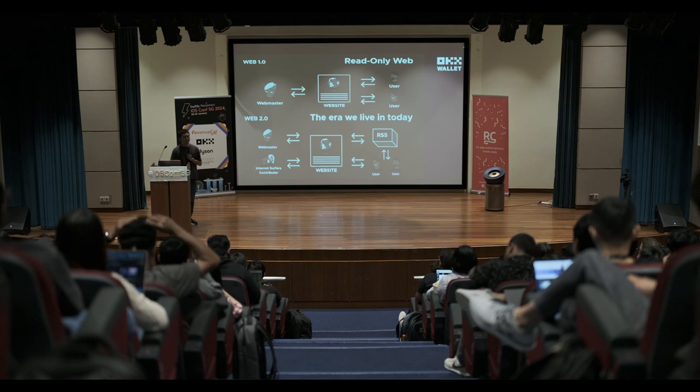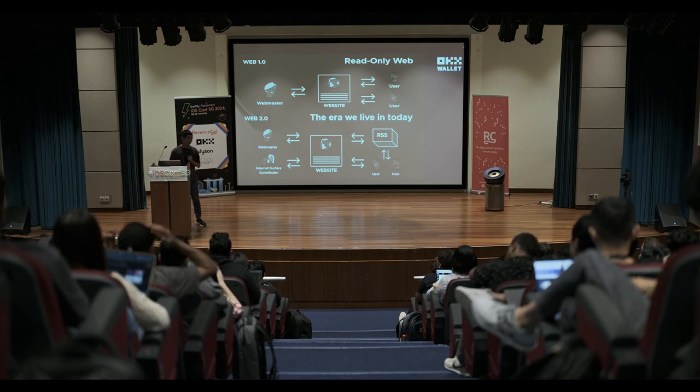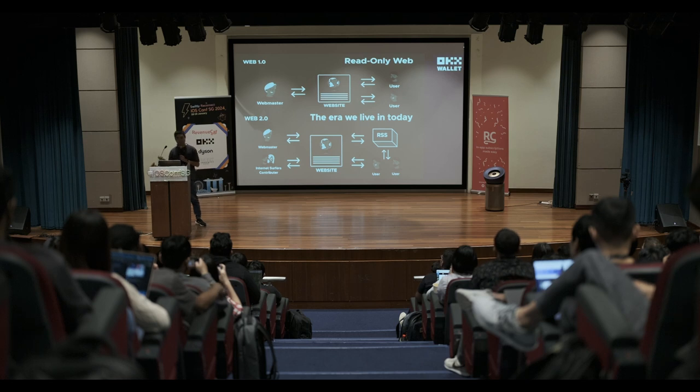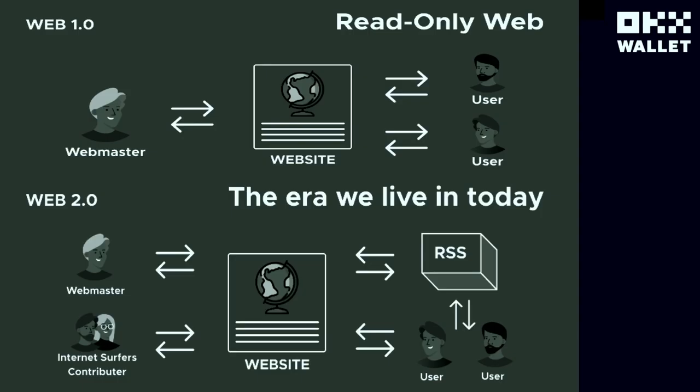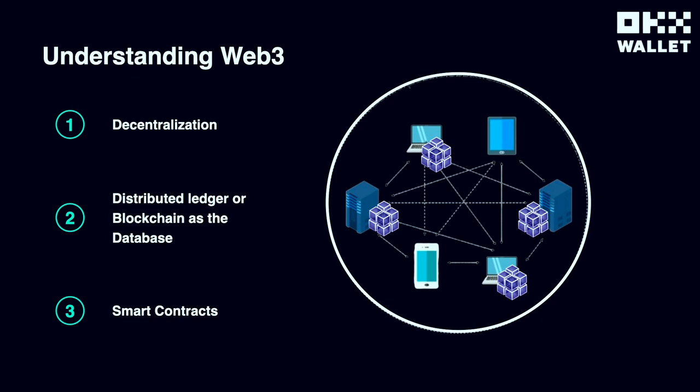To understand Web3, we need to look back at the history of the web and how web technology has evolved over the decades. Web 1.0 provided only static, read-only web pages. We evolved to Web 2.0, which is more dynamic with user interaction — like the social media apps we use today. Now we have Web 3.0, which is different from Web 1 and Web 2. The key difference is decentralization.